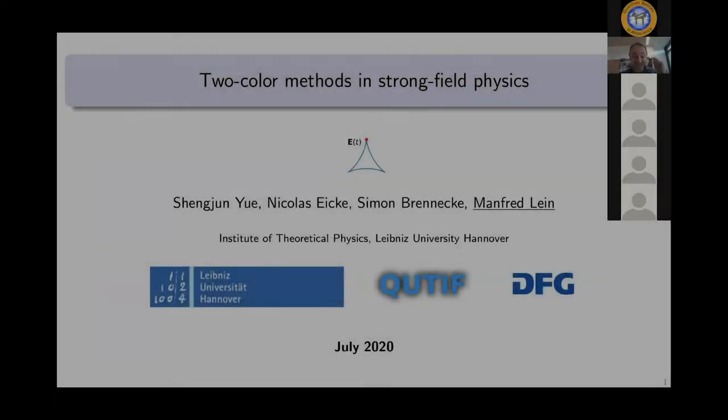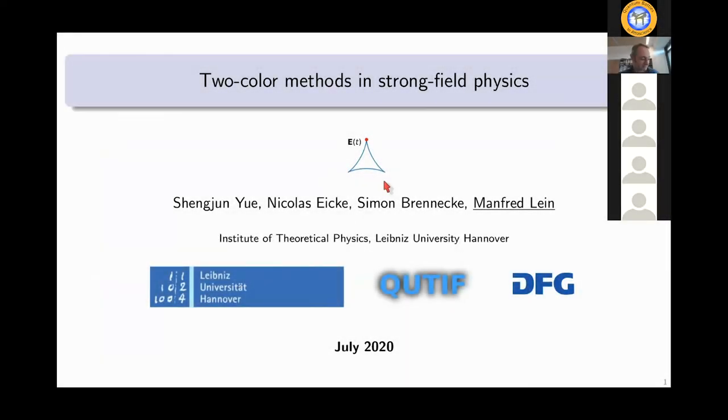It's a great pleasure to be here. Thank you Karla, Andrew and the other guys for making the big effort to make this event possible. I suppose it's one of the few proper conferences that we get to attend this year. So I want to speak about two color methods in strong field physics. This is mainly about work that has been done by two PhD students, Sheng Jun Jue and Nikolas Eike in my group.